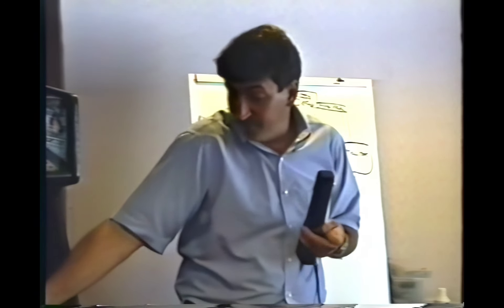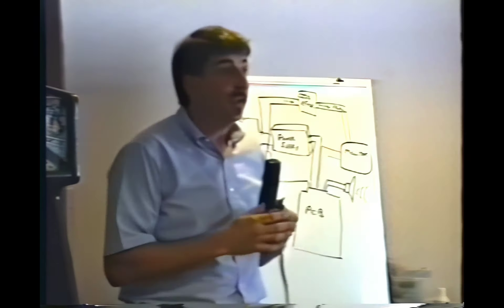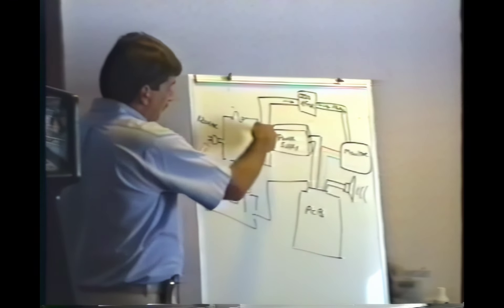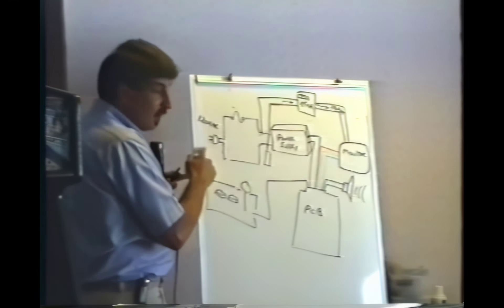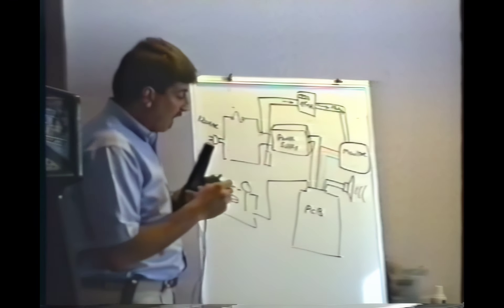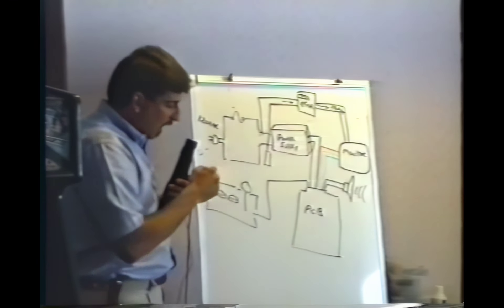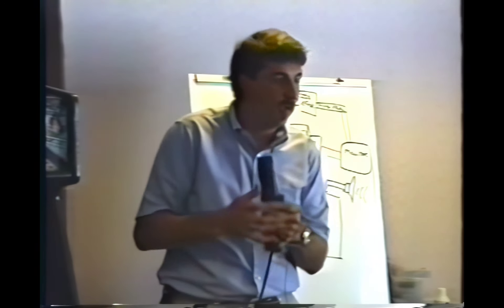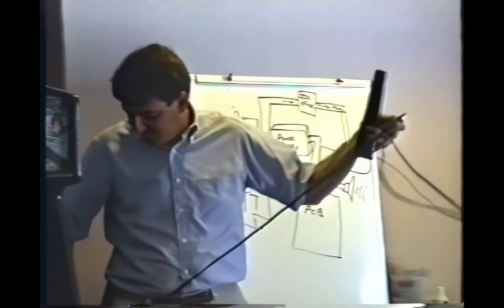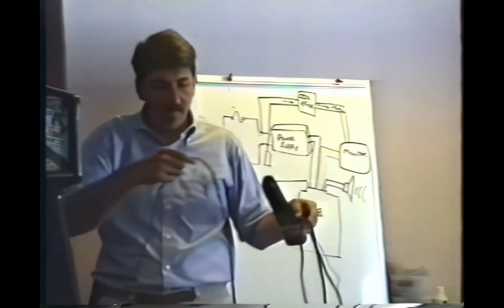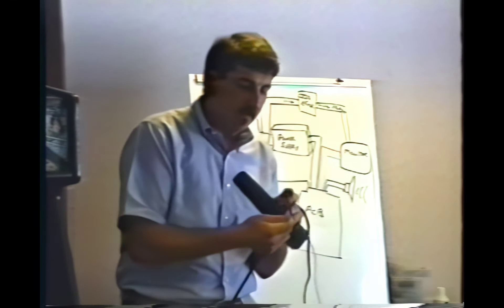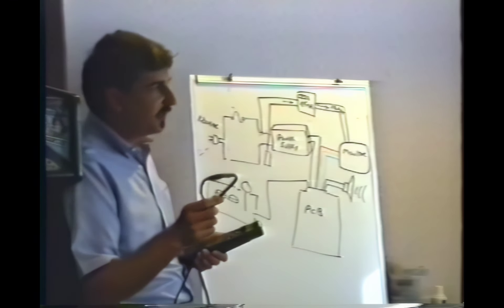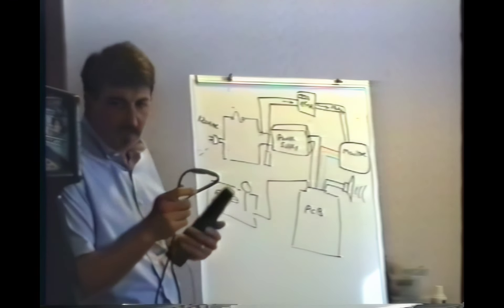What I'm checking for is continuity. In this case, when I put one meter lead here and one on the top prong, it beeps — that wire's good. But when I move to the other prong, I don't get a beep. One of the wires is broken. And this particular cord — this is completely illegal, completely dangerous, not acceptable.